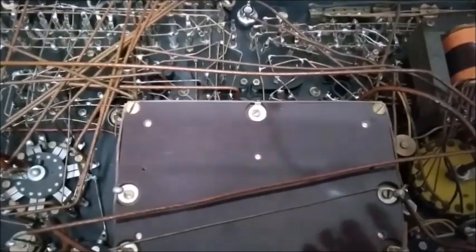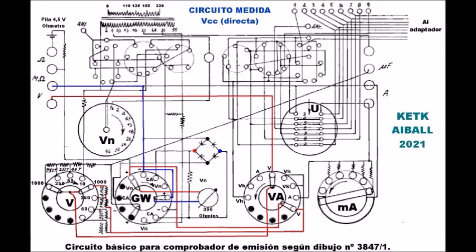Ya he conseguido descifrar el circuito para medir voltajes en corriente continua. Que conste que éste es un circuito básico y no es el circuito real. El polo activo del voltímetro es el polo V a la izquierda de la imagen, y el polo común es el que está señalado como mega ohmios.